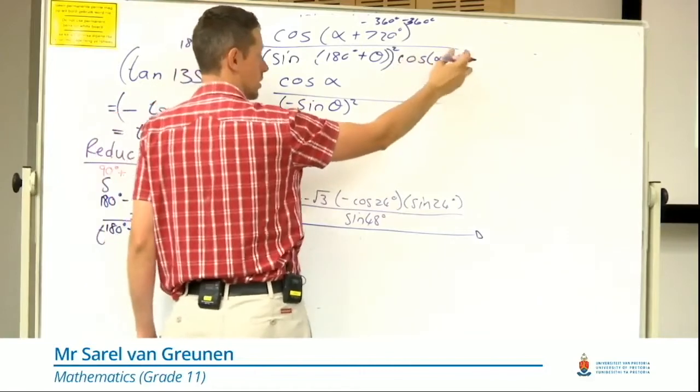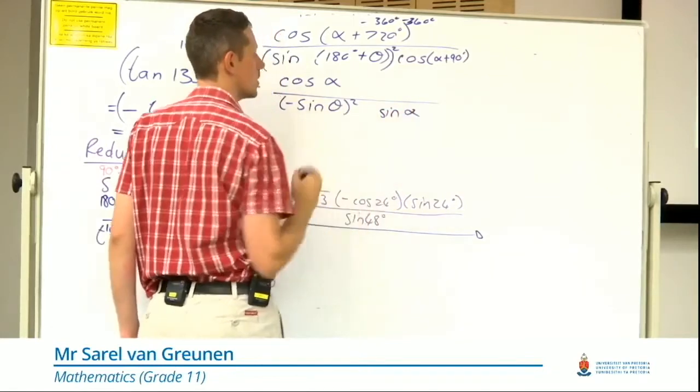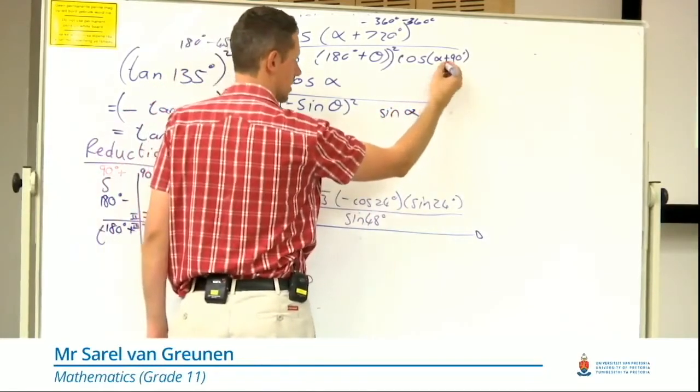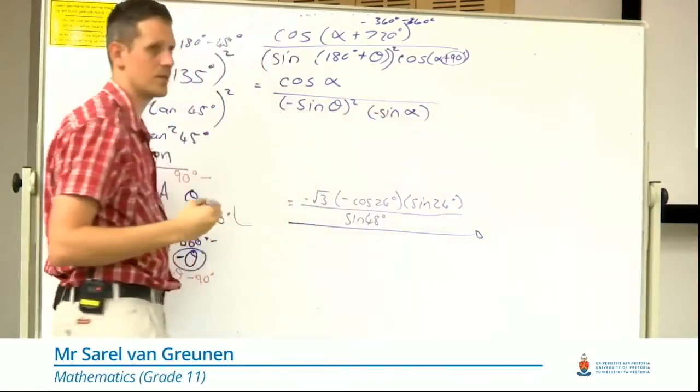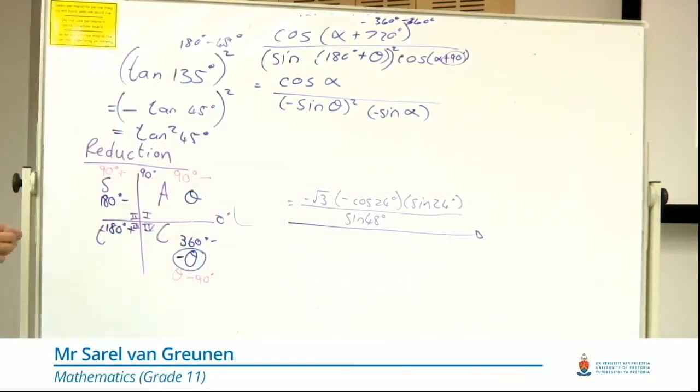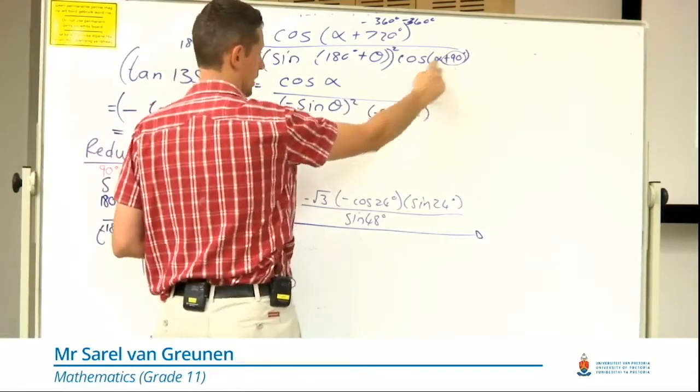Cos 90 makes it sin, but because it's in the second quadrant, it's negative sin of alpha. And I know that because cos is negative there.